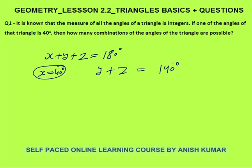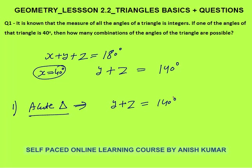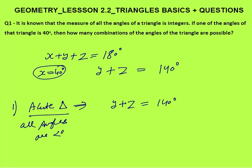How many combinations are possible if the triangle is an acute angle triangle? In an acute angle triangle, all angles are less than 90 degrees. So the maximum value of y could be 89 — then z would be 51. It could be 88 and 50, 80 and 60, 75 and 65, 72 and 68, 71 and 69.